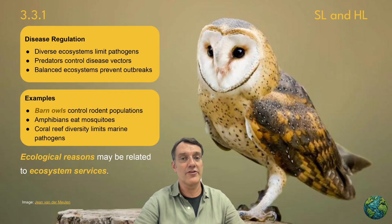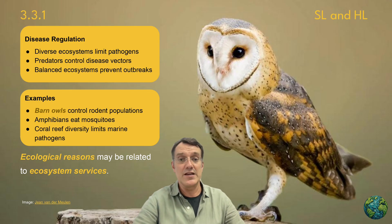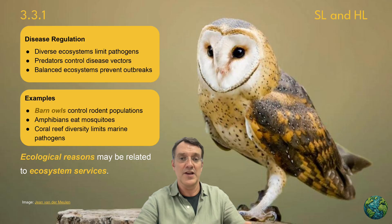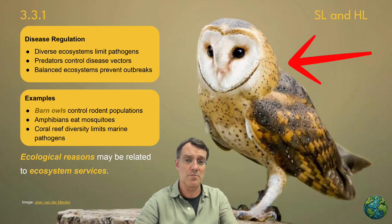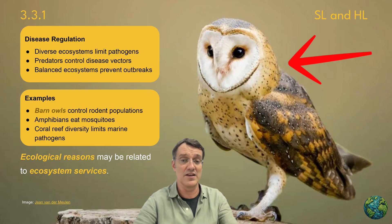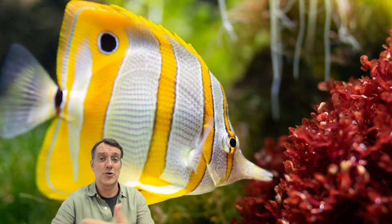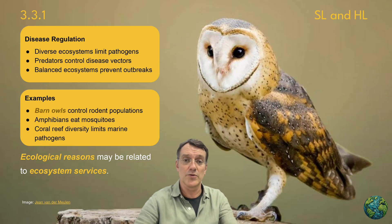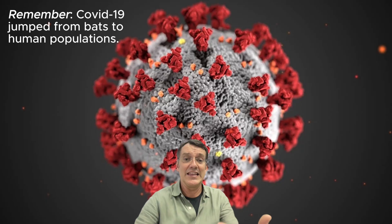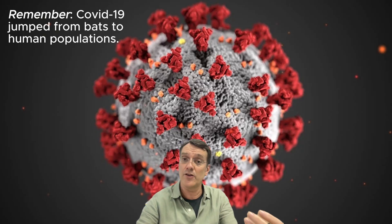Disease regulation is often overlooked, but it is critically important. Diverse ecosystems naturally limit pathogens. Predators control disease vectors, and balanced ecosystems prevent outbreaks. Barn owls control rodent populations that might otherwise spread disease. Amphibians eat mosquitoes that can carry pathogens, and coral reef diversity limits marine pathogens. When we disrupt these natural control systems, it leads to disease outbreaks with serious consequences for wildlife and humans alike.